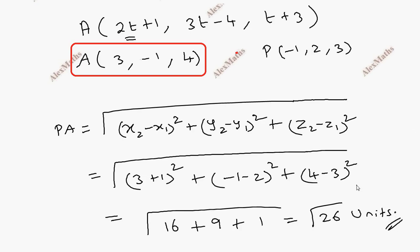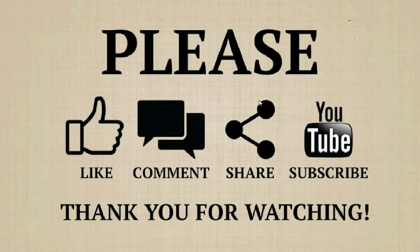So the distance between the point and the line is root 26 units. Thank you.